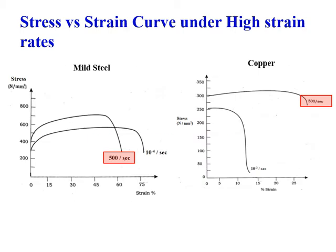If you compare stress-strain curves for different materials under different strain rates — for example, mild steel — two graphs are shown here: one at 500 per second and one at 10^-4 per second. 500 per second means higher strain rate; 10^-4 per second means lower strain rate. You can observe that the curve plotted at 500 per second is at a higher level compared to the curve at 10^-4 per second.